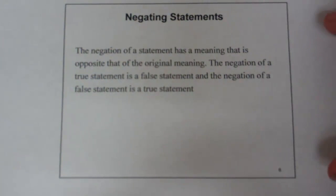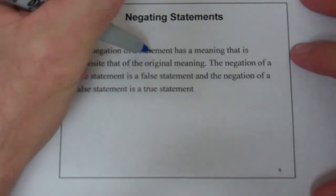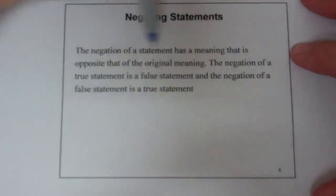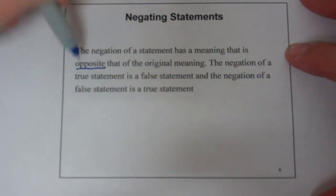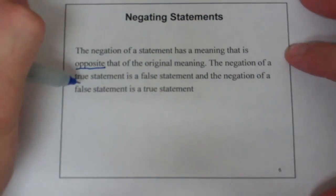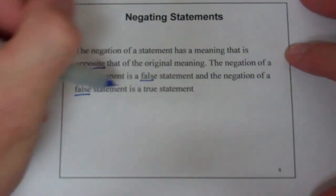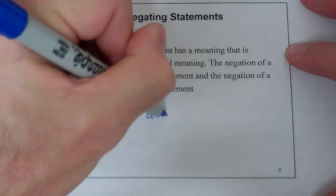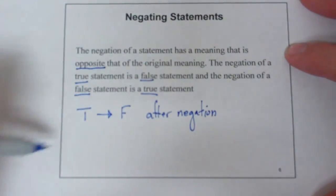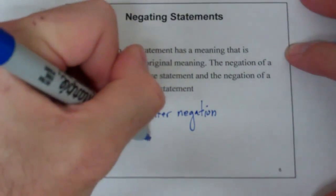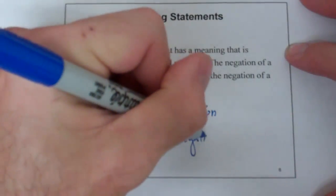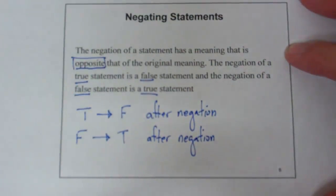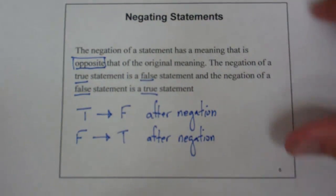Negating statements: the basic idea of a negation is you change its truth value. The negation of a statement has a meaning that is the opposite of the original meaning. The negation of a true statement becomes a false statement, and the negation of a false statement becomes a true statement. So after negation, true becomes false and false becomes true.